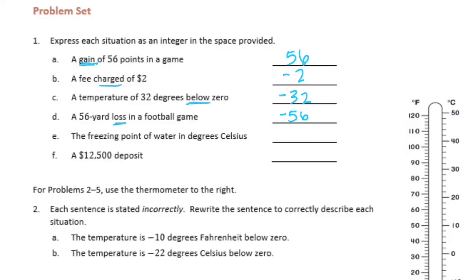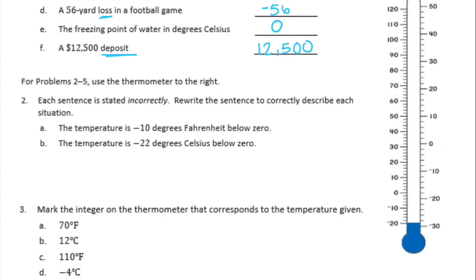Part e: the freezing point of water in degrees Celsius is zero. Part f: a twelve thousand five hundred dollar deposit — a deposit means you're putting money into your bank account, so your bank account is gaining money, so that's positive twelve thousand five hundred.